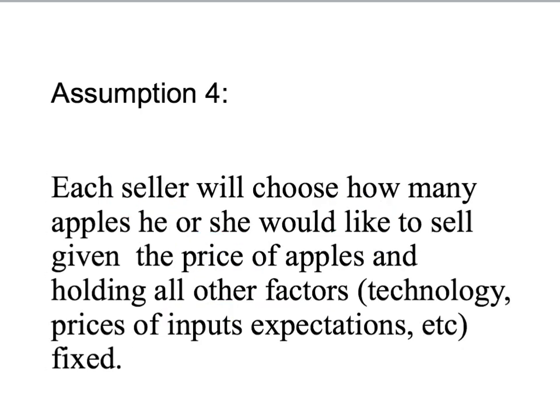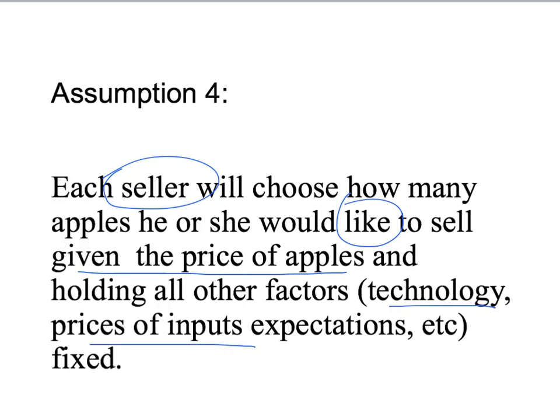Our fourth assumption is the price-taking assumption for sellers. Each seller will choose how many apples he or she would like to sell, given the price of apples, and holding everything else — such as the technology of running an apple shop, the price of inputs such as workers, and expectations — fixed. So: how many apples would an apple seller like to sell, given the price of apples, holding all of that other stuff fixed?